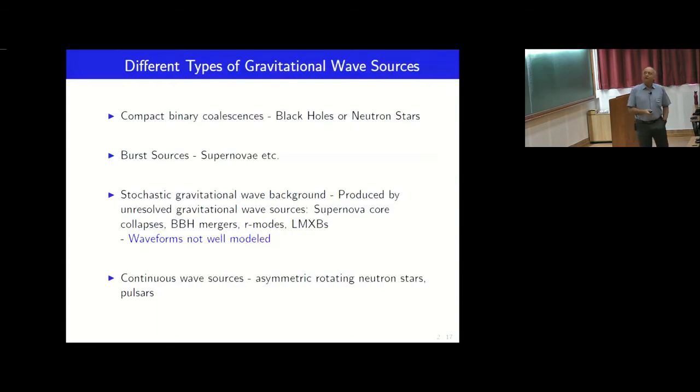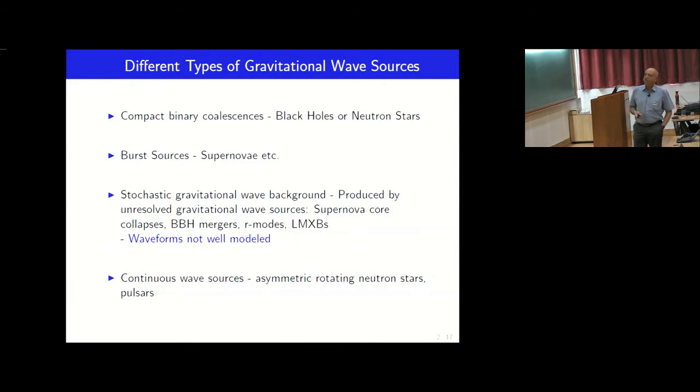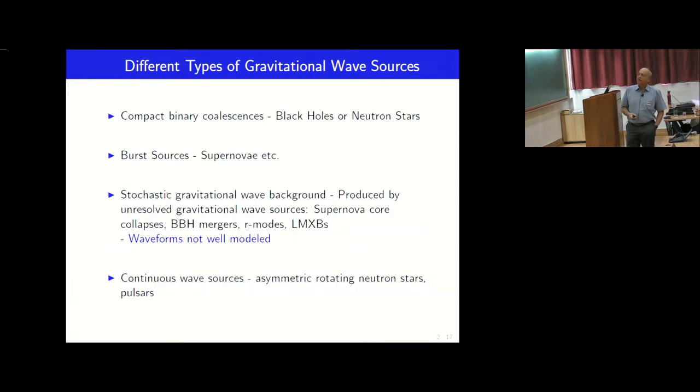So there are different types of gravitational wave sources. The most celebrated one, because in so many years, now three years we have been seeing this: compact binary coalescences, black holes or neutron stars. Those are the sources. They go around each other, emit gravitational waves, and we detect them.